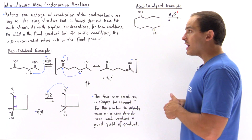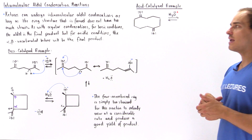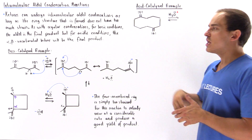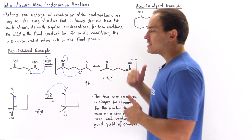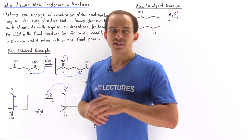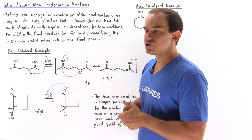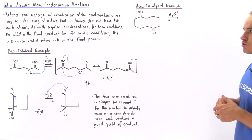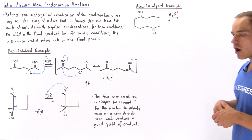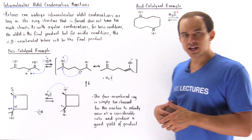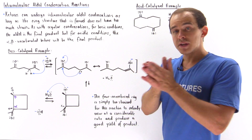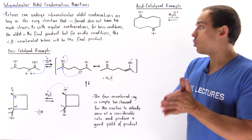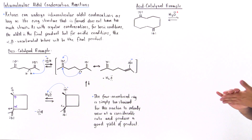As with regular condensations under basic conditions, the aldol is the final product. But for acidic conditions, we form the alpha-beta unsaturated ketone via a dehydration reaction, in which the aldol basically dehydrates into the alpha-beta unsaturated ketone.